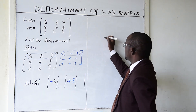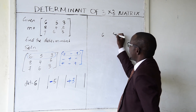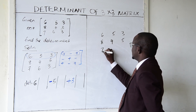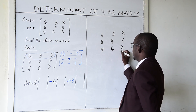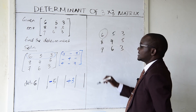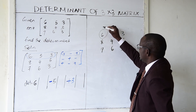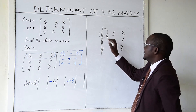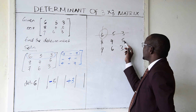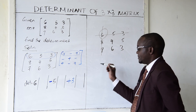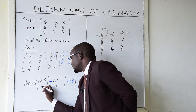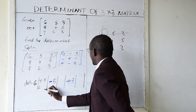To get the submatrix aligned with 6, I take the full matrix 6, 5, 3 / 8, 4, 5 / 7, 6, 3 and cancel the column and row containing 6. I remain with the 2 by 2 matrix: 4, 5 / 6, 3.